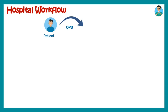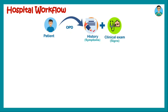As a doctor, you take a history of the patient, which tells you about the symptoms — for example, abdominal pain. Then you perform a clinical examination, which gives you particular signs — for example, Murphy's sign. Based on these symptoms and signs from the history and clinical examination, you may be very sure about a particular diagnosis, and then you write a provisional diagnosis.